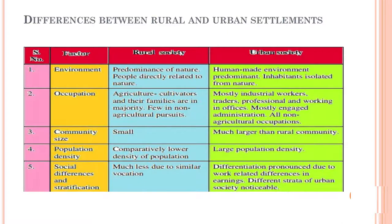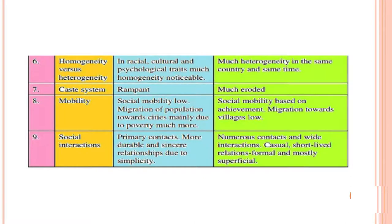Third, community size: small in rural society and much larger in urban society. Fourth, population density: comparatively lower in rural society, larger in urban society. Fifth, social stratification: much less in rural society due to similar locations, but pronounced in urban society due to work-related differences in earnings. Sixth, homogeneity versus heterogeneity: much homogeneity in racial, cultural and psychological traits in rural society; much heterogeneity in urban society. Caste system is rampant in rural society but much eroded in urban society. Seventh, mobility: social mobility is low in rural society, migration mainly due to poverty; while social mobility is based on achievement in urban society, with low migration towards villages.